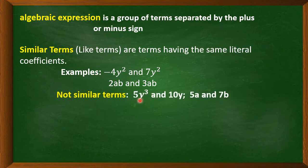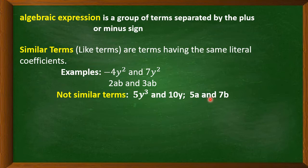Not similar terms: for example, 5y³ and 10y. Of course, they have different literal coefficients — here y³ and here y. Also, 5a and 7b are not similar because they have different literal coefficients.